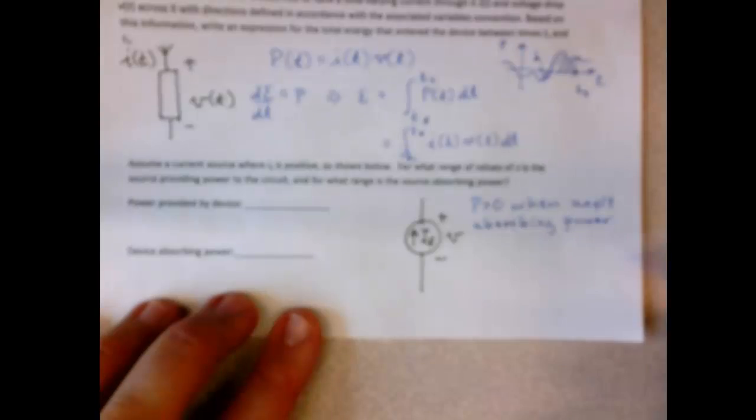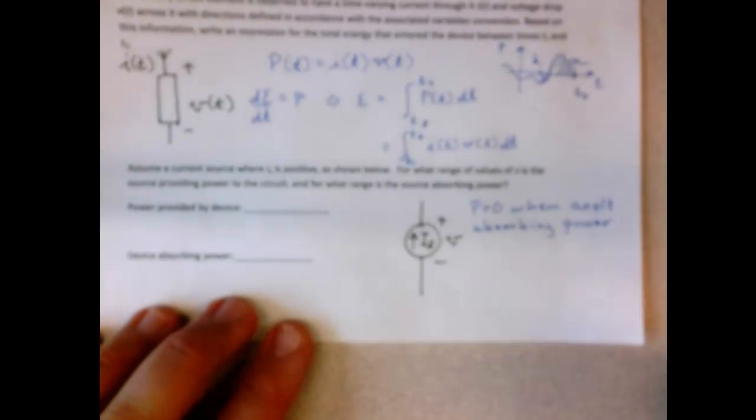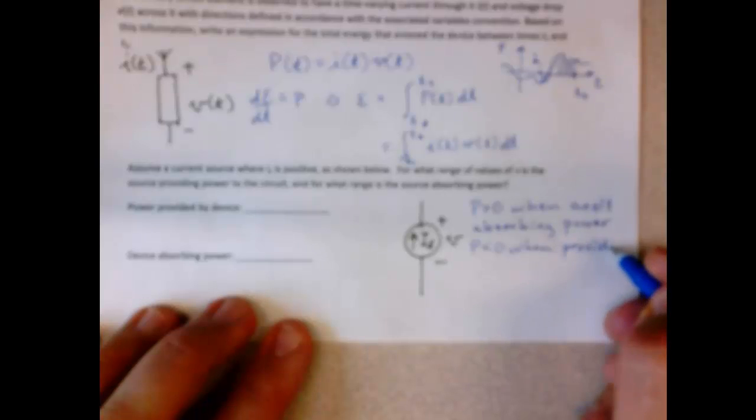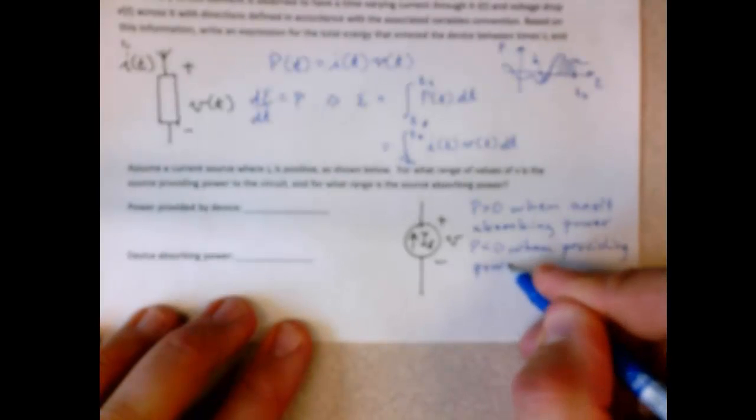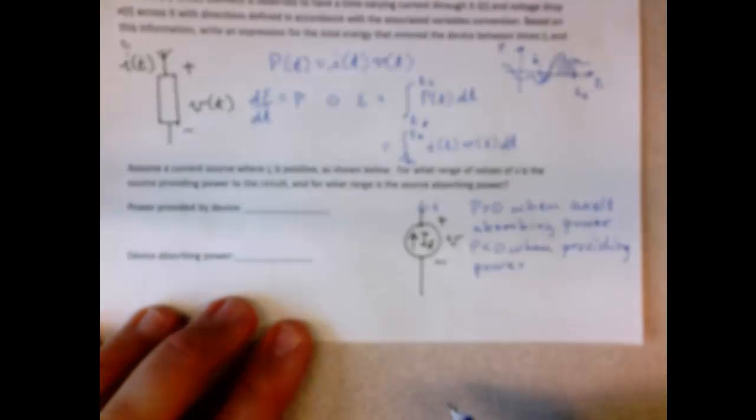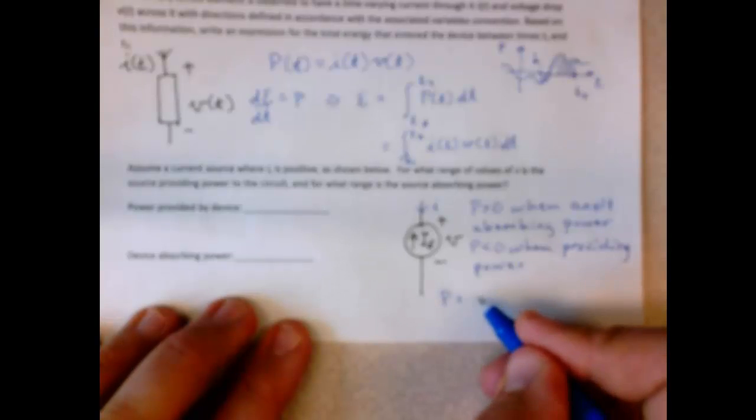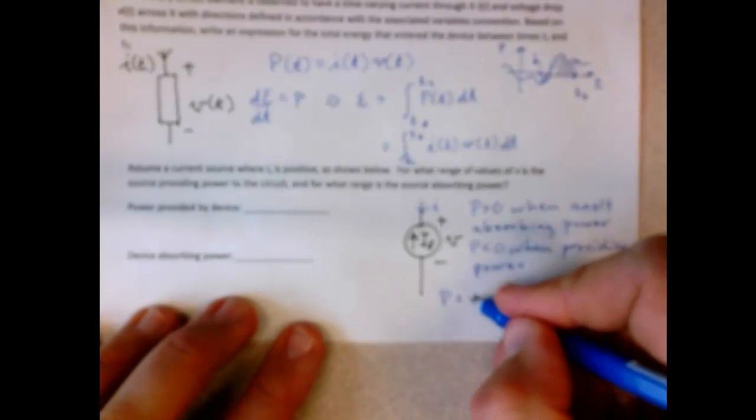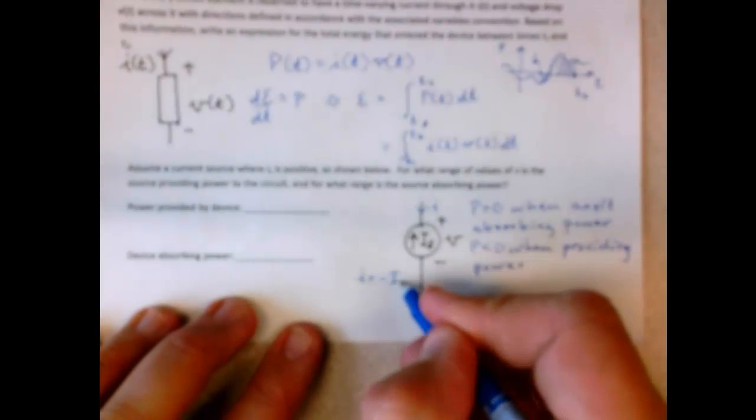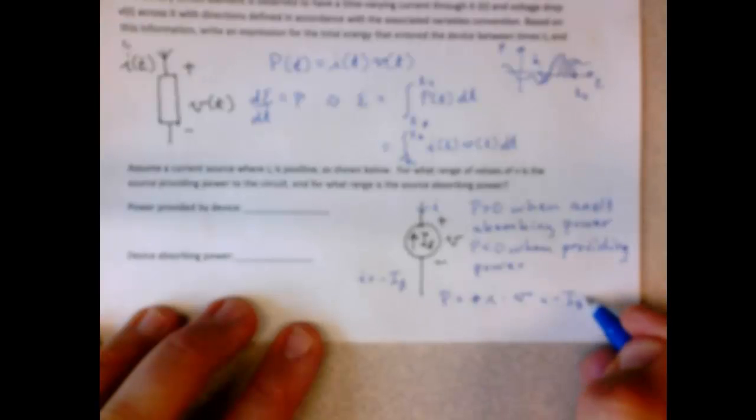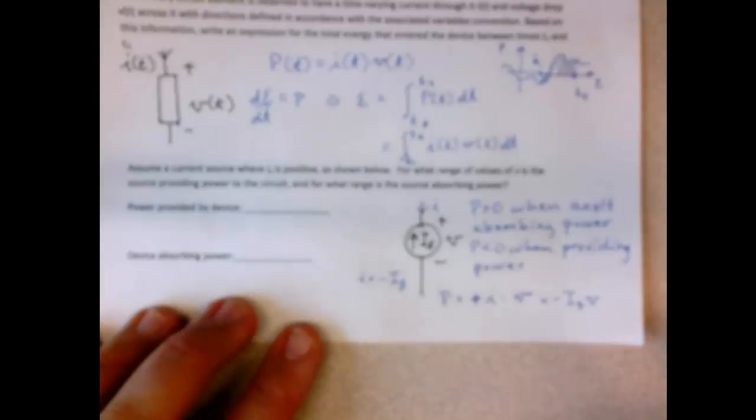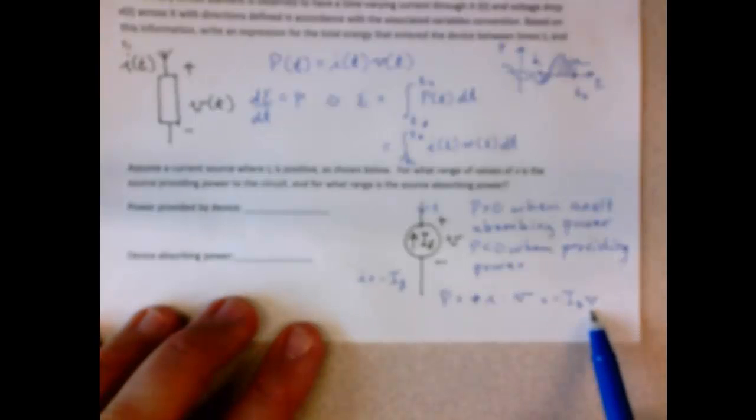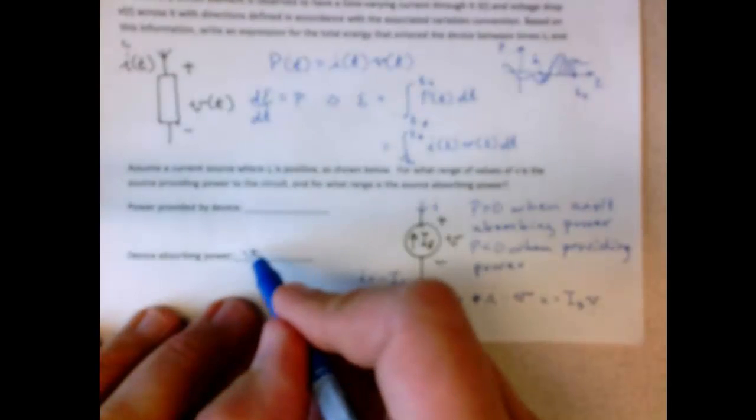So like a resistor dissipating power, power is greater than zero for that. When it's providing power, power is less than zero. All right, now in this case, if we use the associated variables convention, I is equal to minus I S. So power is equal to plus I times V. But I is equal to minus I S because they're in opposite directions. So that's minus I S times V. And therefore, as long as the voltage is greater than zero, the power will be less than zero. So here the voltage is greater than zero.